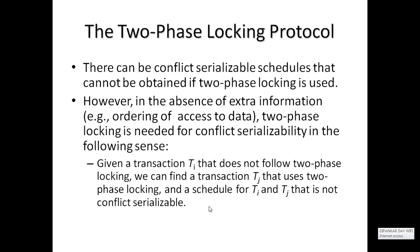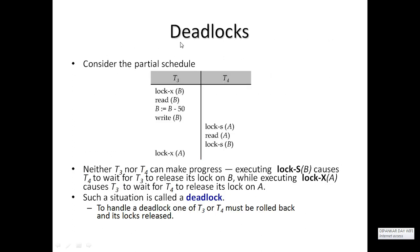Next, deadlock. Deadlock is a condition where a transaction cannot continue its normal execution. For example, suppose there are two transactions T3 and T4. T3 acquires a lock on data item B, transfers 50 from account B, performs a write on B, and cannot release the lock.